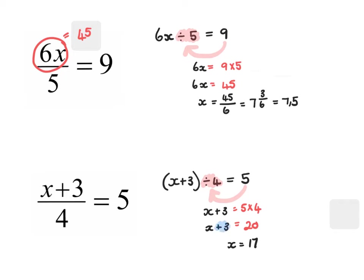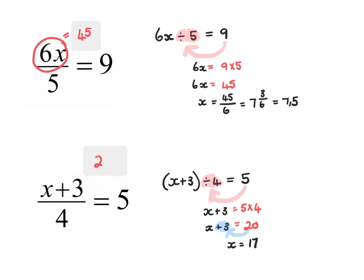The method I followed was 20 minus 3, because instead of adding 3 when working backwards I subtract 3. Using the block method: if I cover the numerator with a block I can ask, what divided by 4 equals 5? That is 20. So I write 20 in the block, and since x plus 3 equals 20, then x equals 17.